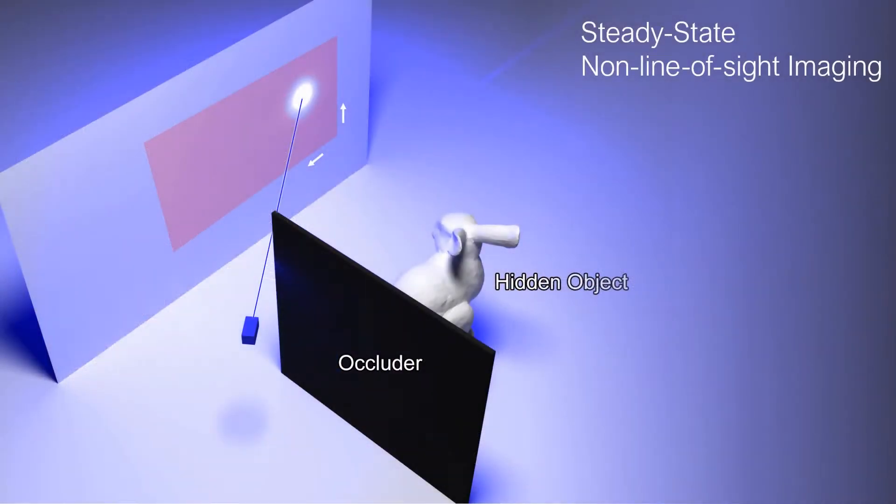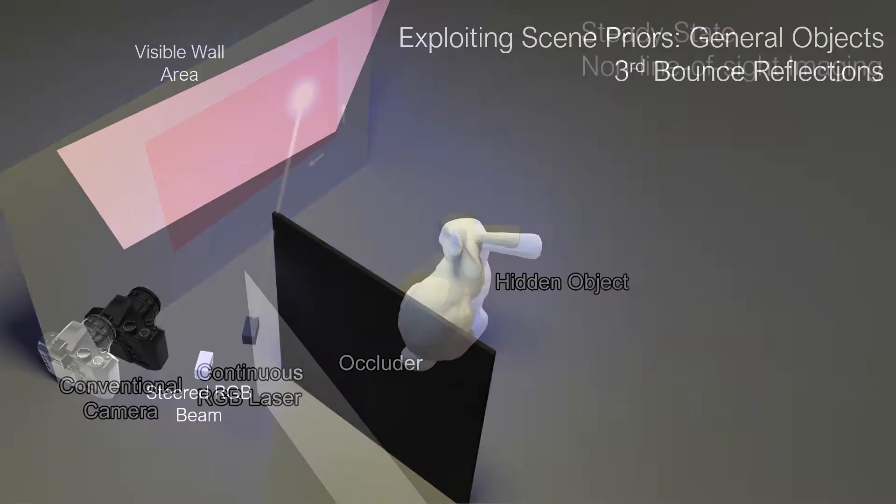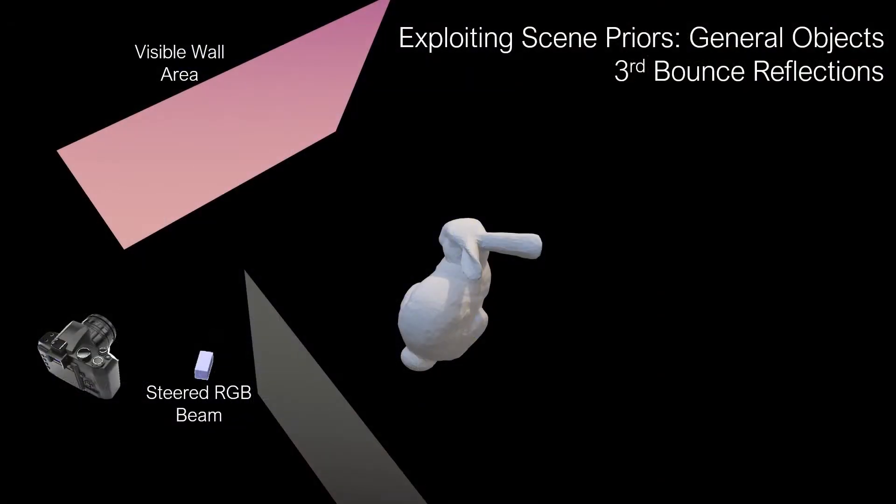In this work, we demonstrate that it is possible to achieve the same using a conventional intensity sensor, a beam of continuous collimated white light, and exploiting scene priors.